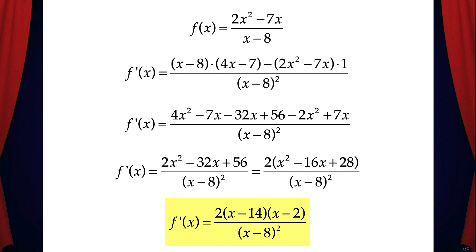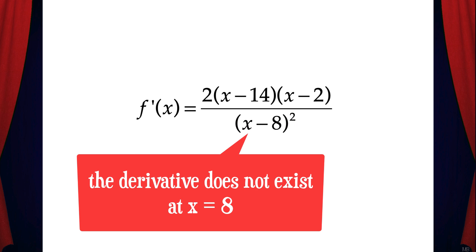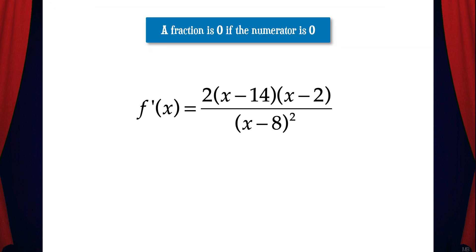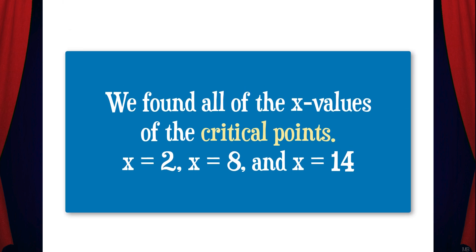Now we can determine the x-values where the derivative is zero or does not exist. Looking at the denominator, plugging in x = 8 would give us zero in the denominator, meaning we'd be dividing by zero. Therefore, the derivative does not exist at x = 8. Now, a fraction is zero when the numerator is zero, and two values of x make the numerator zero: x = 14 or x = 2. So we've found all x-values of the critical points: x = 2, x = 8, and x = 14.